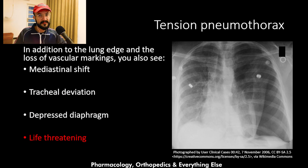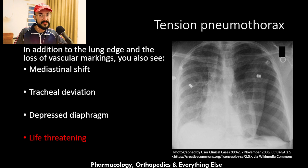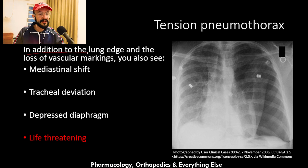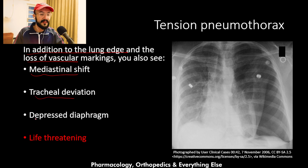Pneumothorax has different types: open pneumothorax, closed pneumothorax, and tension pneumothorax. In open and closed pneumothorax you see the lung edge and loss of vessels beyond it. In tension pneumothorax, in addition to these findings, you will also see mediastinal shift, tracheal deviation, and a depressed diaphragm.